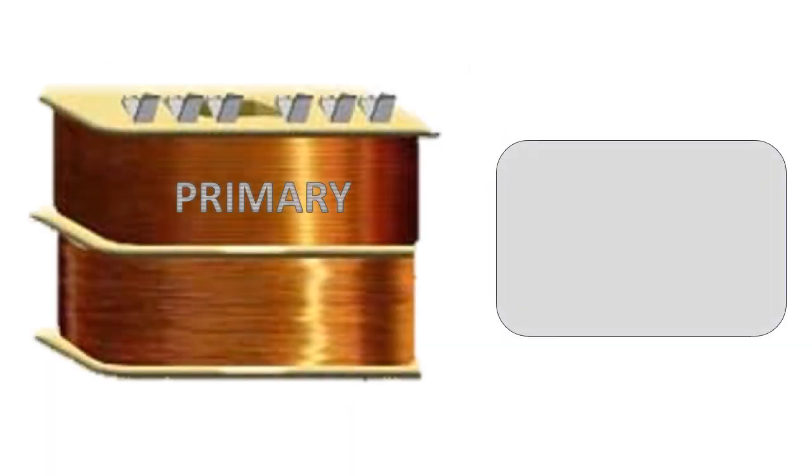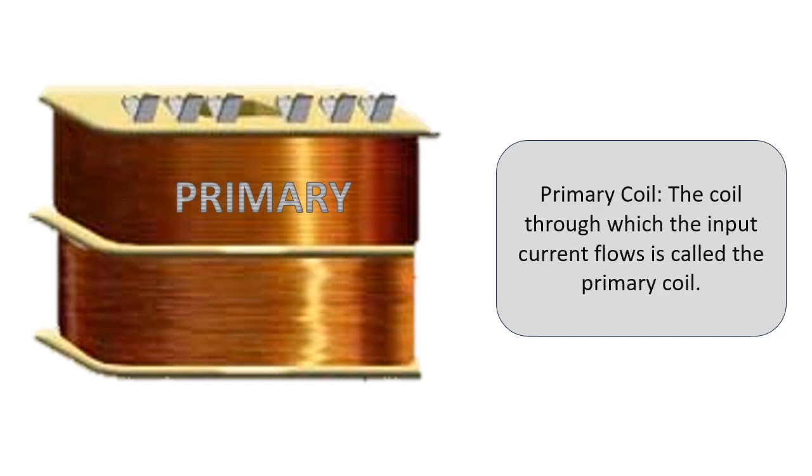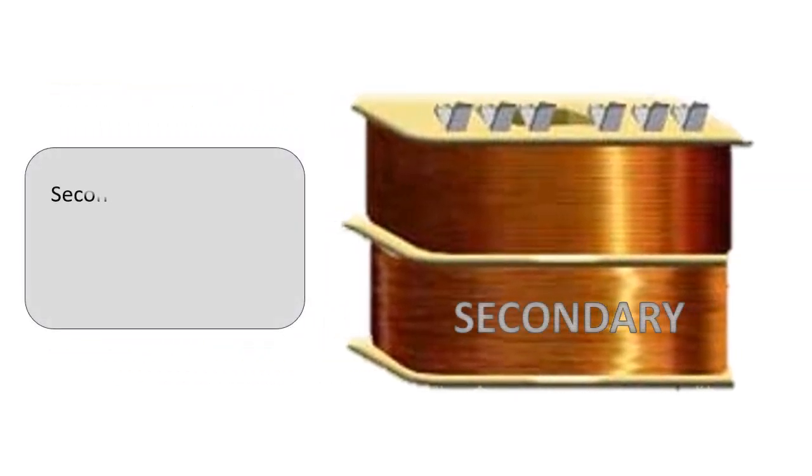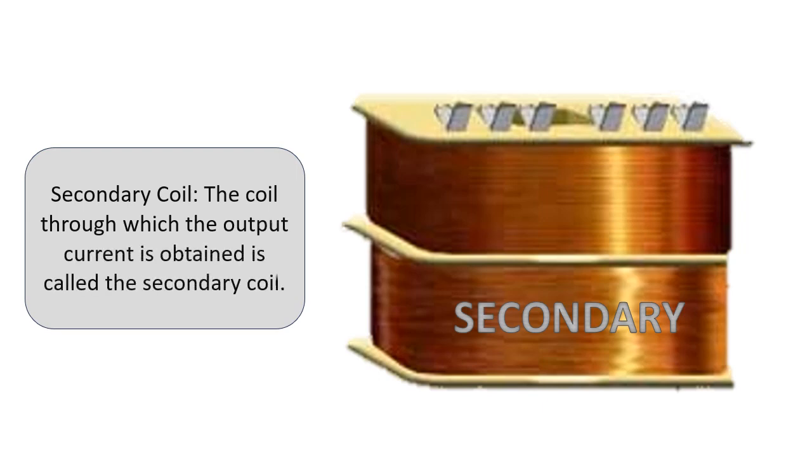Basic Components - Primary Coil: The coil through which the input current flows is called the primary coil. Secondary Coil: The coil through which the output current is obtained is called the secondary coil.